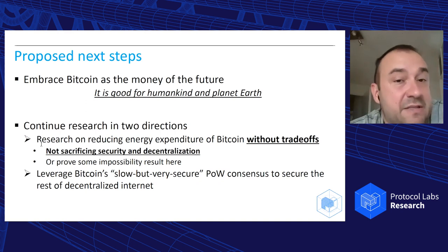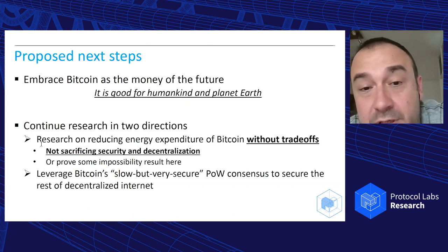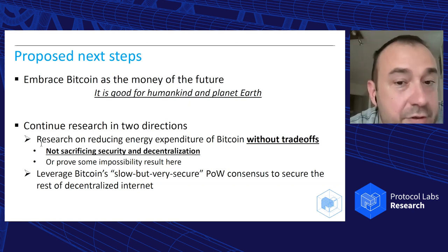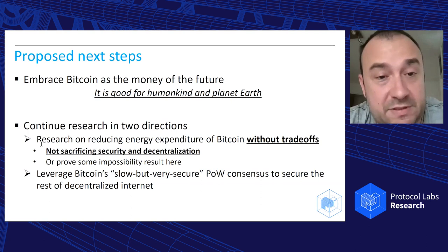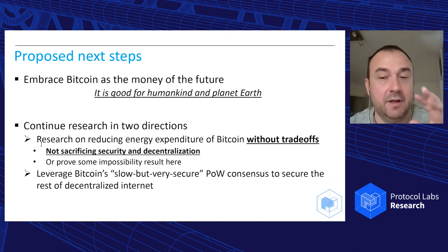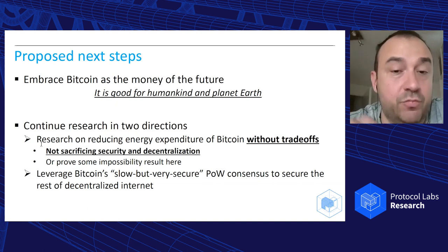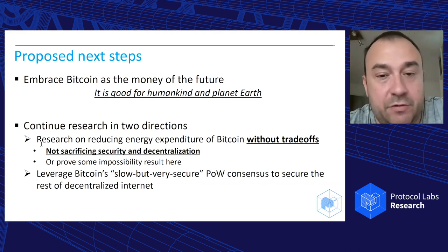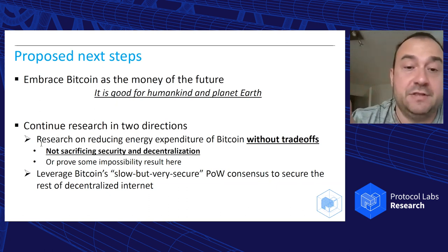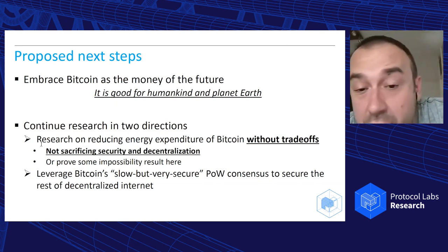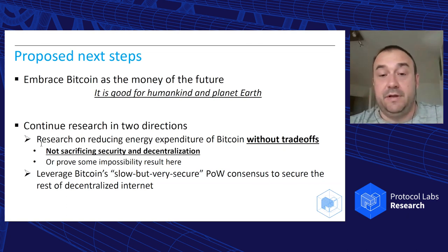What I propose next is to embrace Bitcoin as the money of the future because it's good for humankind and planet Earth. Going back to decentralized systems, the question is: can we support research on reducing energy expenditure but without trade-offs? Proof of stake might be useful, but not for layer one. For layer one, if we want to improve Bitcoin, let's not sacrifice security and decentralization. Let's leverage Bitcoin's slow but very secure proof-of-work consensus to secure the rest of decentralized internet — anchoring other systems into Bitcoin.